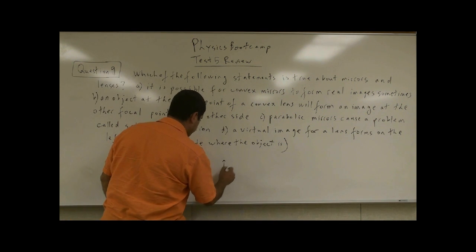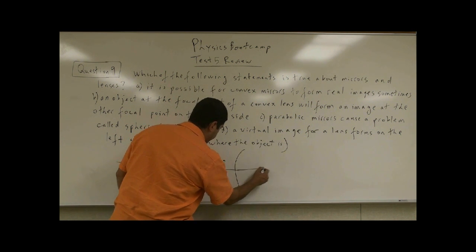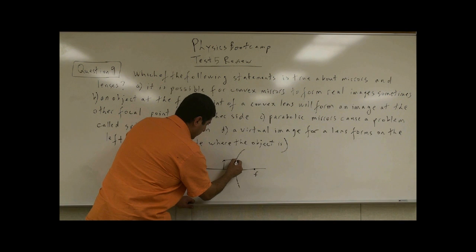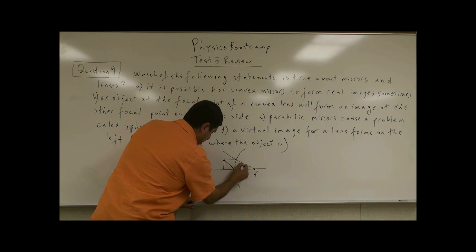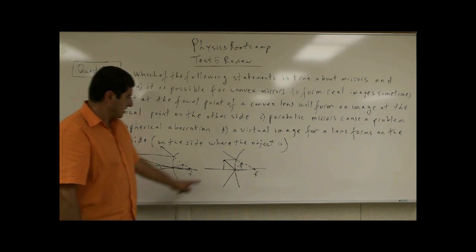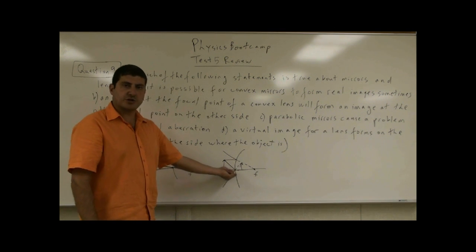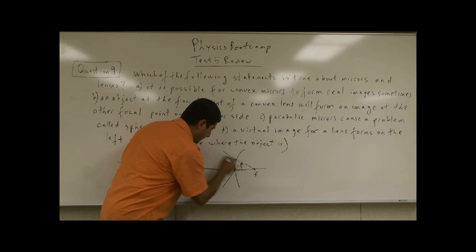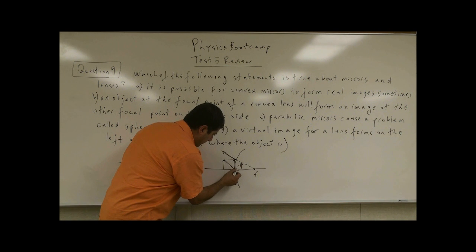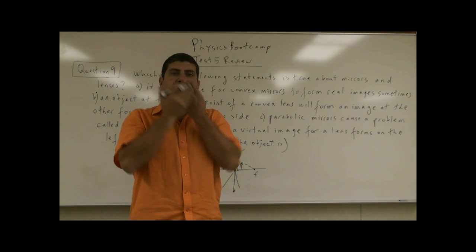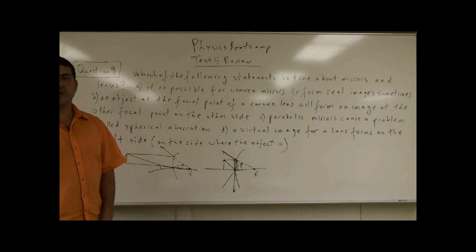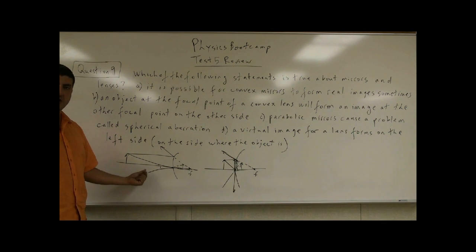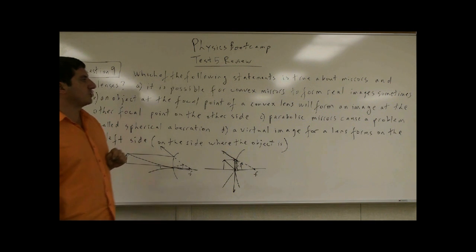What if the object is closer? If the object is closer, the image just gets closer to the surface, but it's still on the other side. If you're standing right up on the mirror, the image will be right here, reflecting and forming an image right next to you on the other side. So, there's never a time where a convex mirror forms a real image. It is possible for convex mirrors to form real images — no. False.